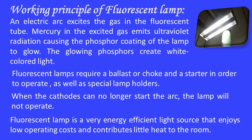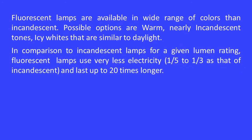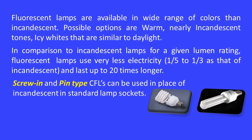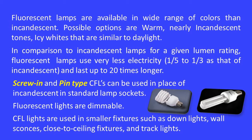Fluorescent lamps are a very energy-efficient light source that enjoy low operating costs and contribute little heat. They are available in a wide range of colors, from warm nearly-incandescent tones to icy whites similar to daylight. For a given lumen rating, fluorescent lamps use very little electricity and last up to 20 times longer than incandescent. CFL lights are used in small fixtures such as downlights, wall cones, close-to-ceiling fixtures, and track lighting.